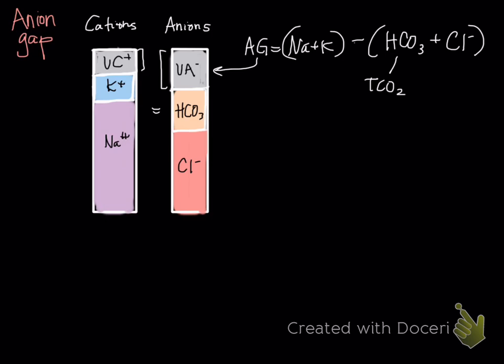What we actually look for is we look for an increase in anion gap, and an increase in anion gap essentially tells us that we have an increase in acids, even though it's not necessarily a one-to-one relationship.